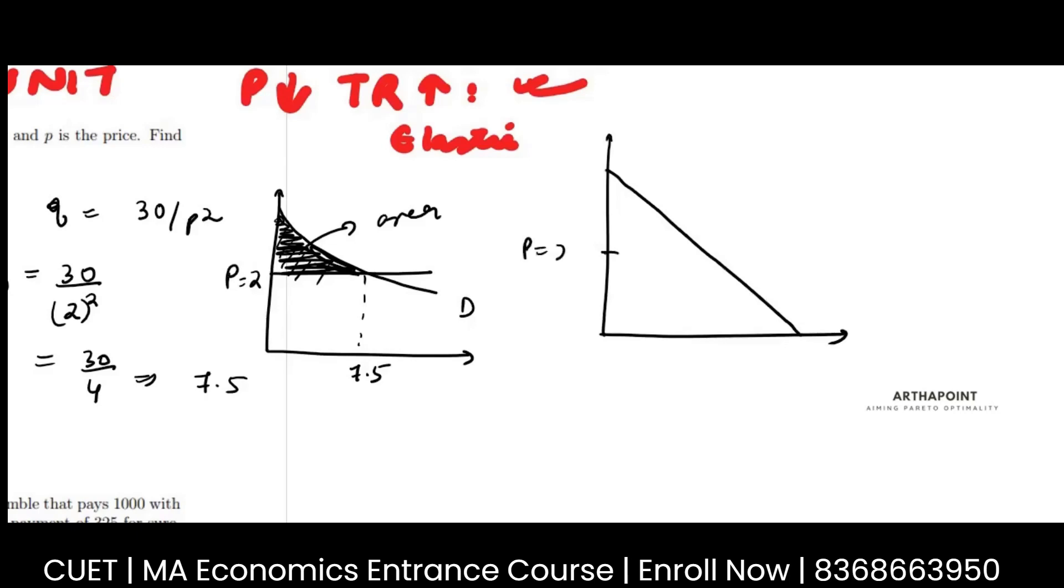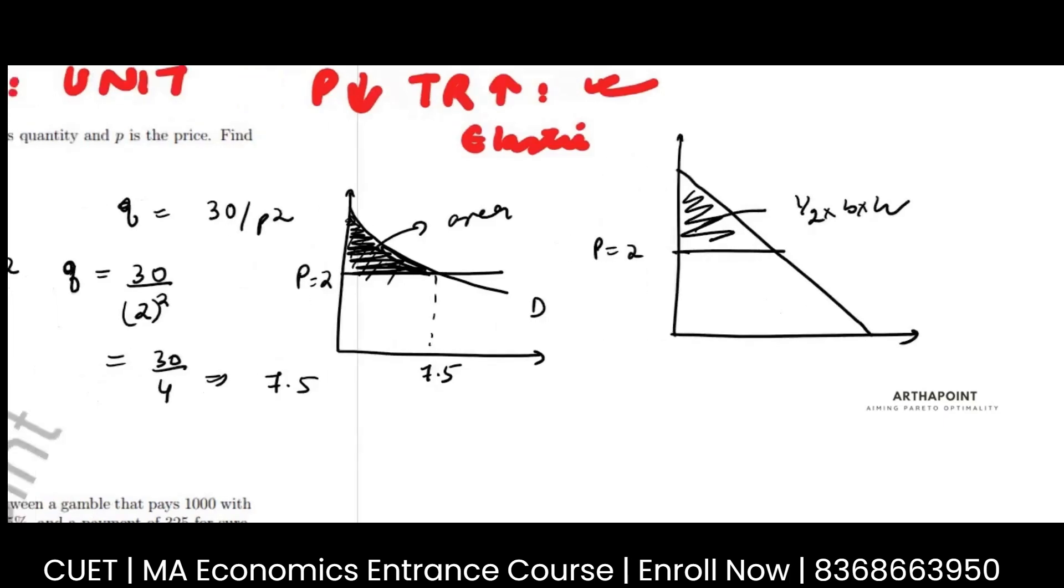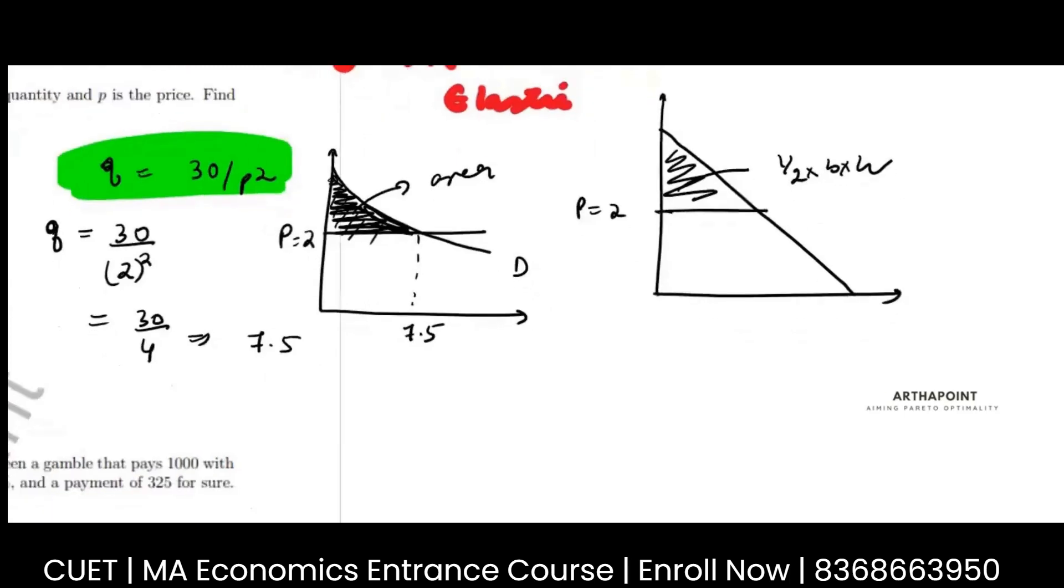then this area would have been half into base into height of the triangle. But here, this is not what is happening. Here, I don't have this as a line. This is a quadratic relationship that I have. So therefore, the only way to find is to integrate this function.